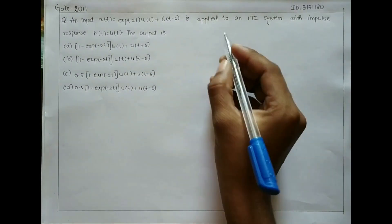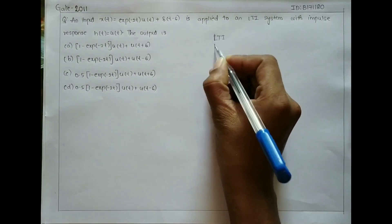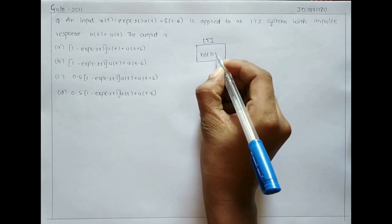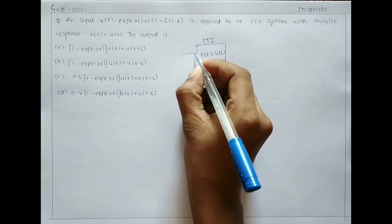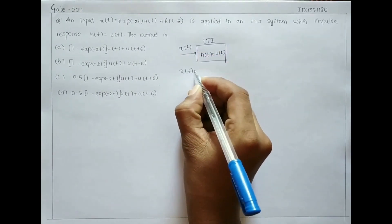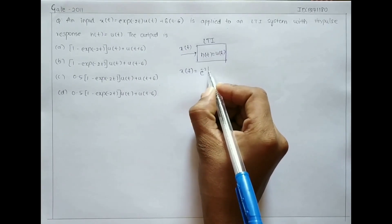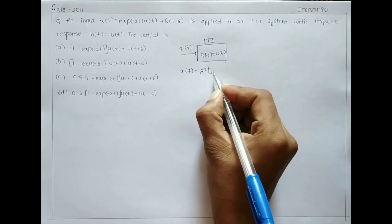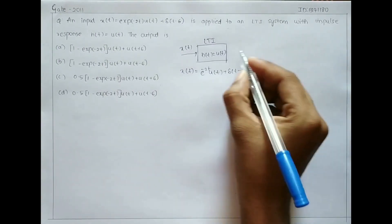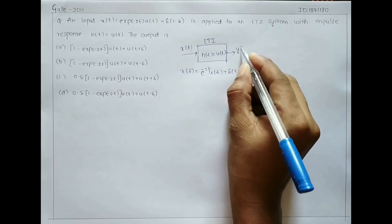Given that an LTI system has impulse response h(t) equals u(t). Its input x(t) is given as x(t) equals e to the power minus 2t into u(t) plus delta(t minus 6). We need to find the output y(t).